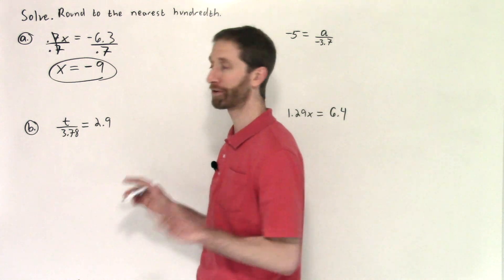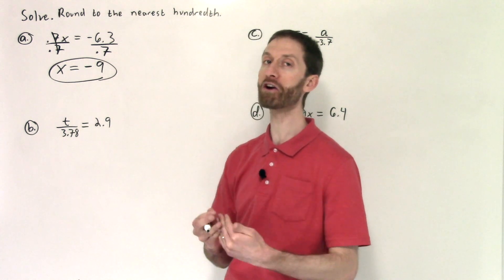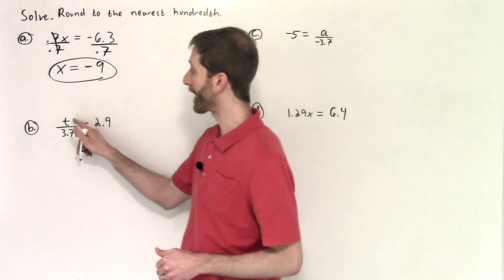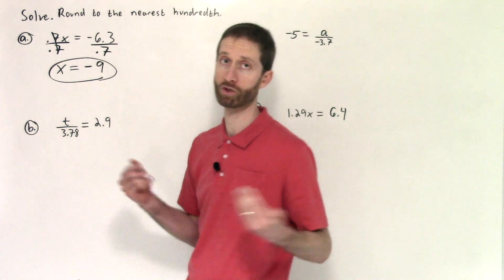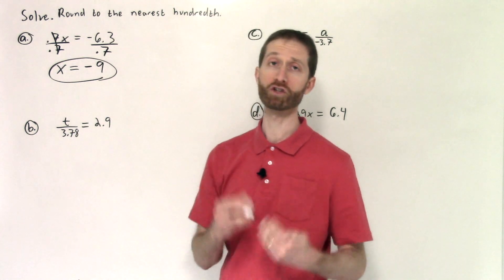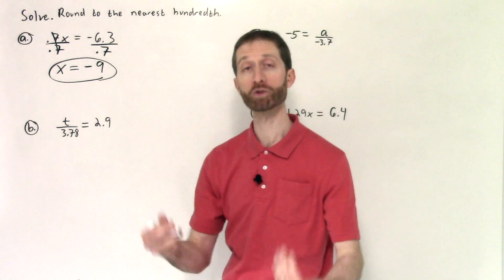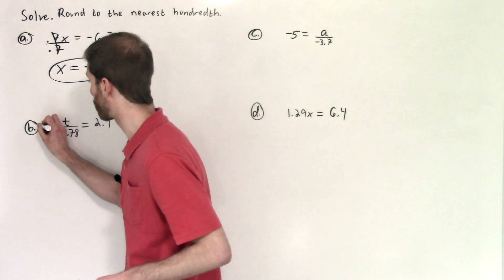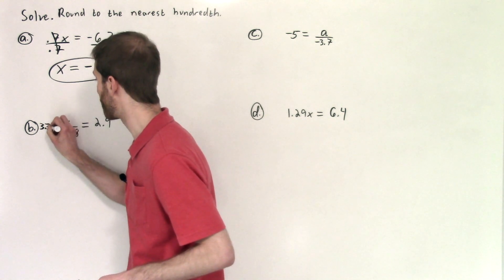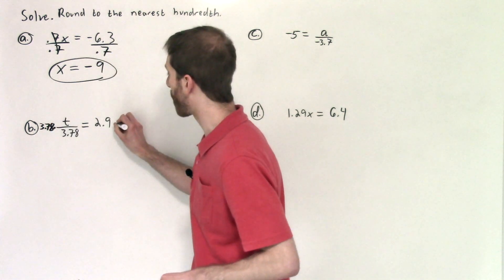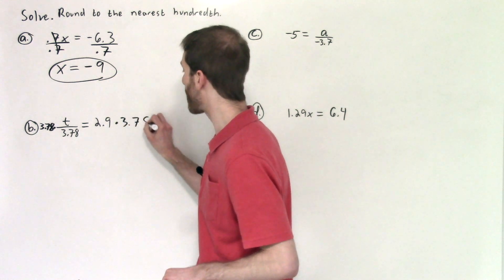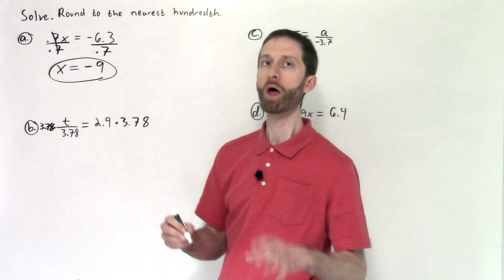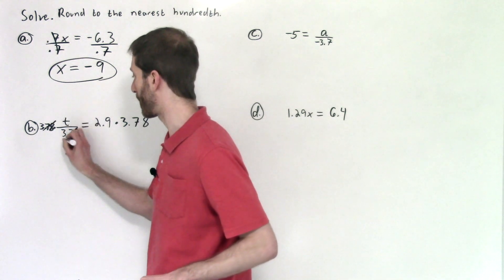Letter B. Definitely a calculator problem. But don't be scared off by the decimals. We are dividing t by 3.78 to get a number, 2.9. To undo division by 3.78, we multiply by 3.78. So I'm going to multiply both sides by 3.78. And then what I do to one side I've got to do to the other. I recognize these are gross numbers, but your goal is to isolate t, which we have done.